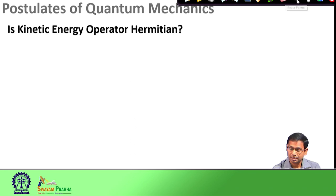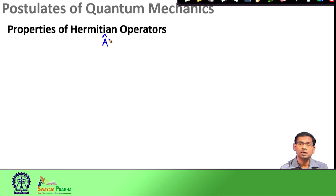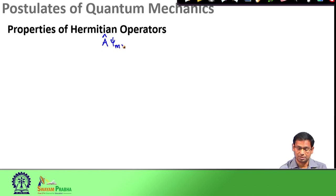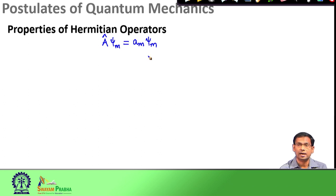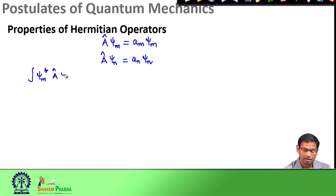Next, we would discuss some important properties of Hermitian operators. Let us consider that I have an operator A which is a Hermitian operator. Suppose ψ_m is an eigenfunction of operator A with eigenvalue A_m — I can write down this eigenvalue equation. Similarly, ψ_n is another eigenfunction of operator A with eigenvalue A_n.